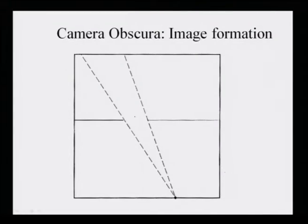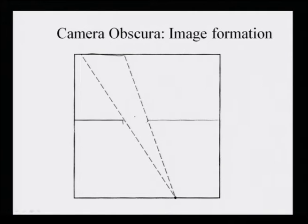Let us start with a very simple thing: the camera, or camera obscura. In a camera we know it is basically a black box with a pinhole. Light passes through this pinhole and forms an image. So if we have an image plane and a small hole or pinhole through which light passes, an image is formed there — this is what a camera obscura looks like. A modern camera has many other lenses.